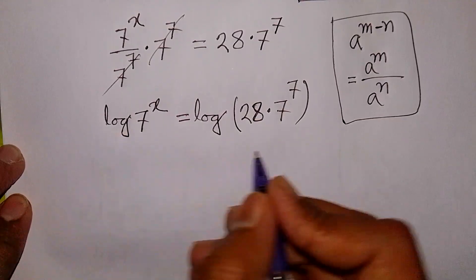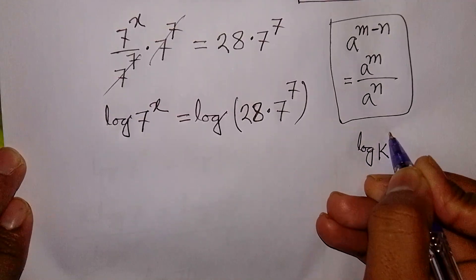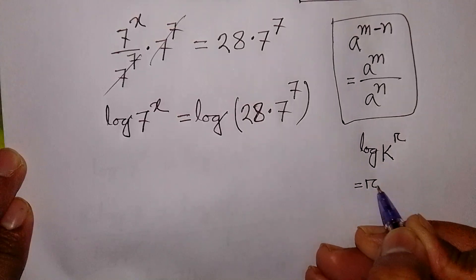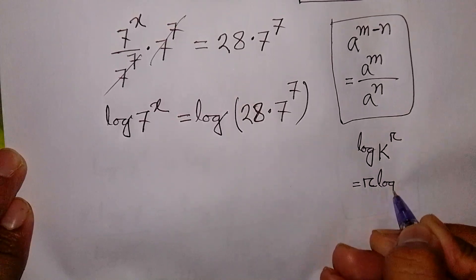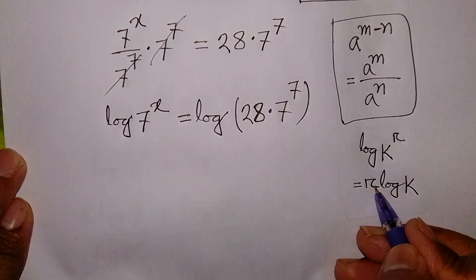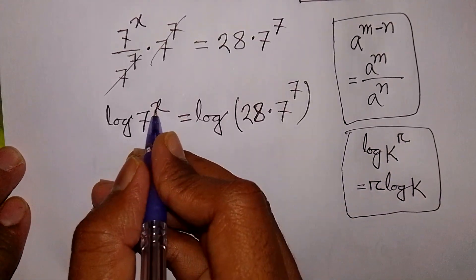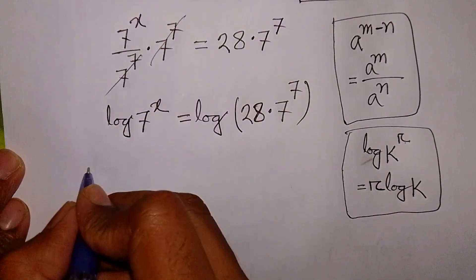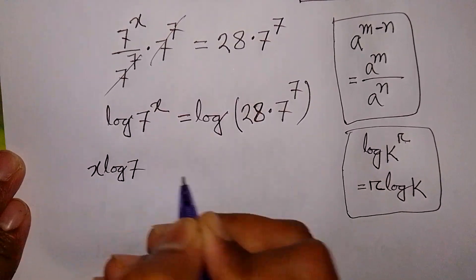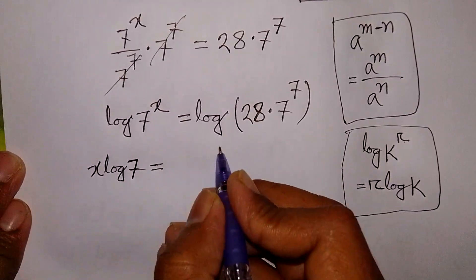Here, we can apply the rule that log k power r is equal to r log k. This power r moves to the base. So here, this power x will move to the base. So it will be x log 7 is equal to the right side.